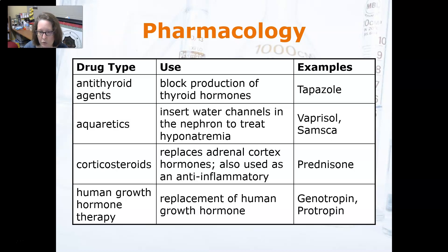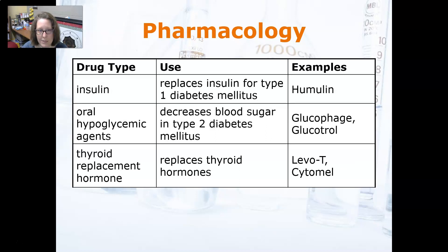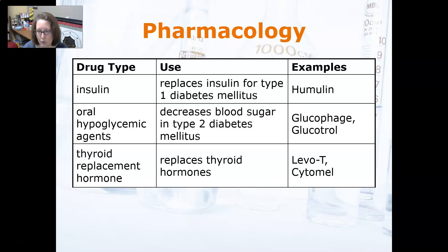Human growth hormone therapy is a replacement of human growth hormone for a person who doesn't produce enough, which may result in dwarfism — examples include Genotropin and Protropin. Insulin replaces insulin for type 1 diabetes mellitus, like Humulin. Oral hypoglycemic agents decrease blood sugar levels in type 2 diabetes mellitus, like Glucophage and Glucotrol.